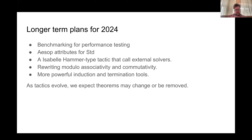I'd like to work on a rewriting module for associativity and commutativity for simp and rewrite — this would reduce the lemma count on commutative operators and improve consistency, so you don't have to order operations in a particular way to get cancellation lemmas to apply. And more powerful induction and termination tools, which are actively being worked on in Lean core, making sure those are integrated and first-class supported in all of standard.